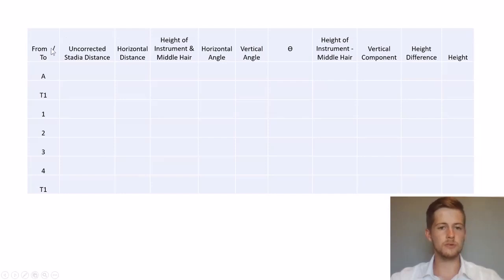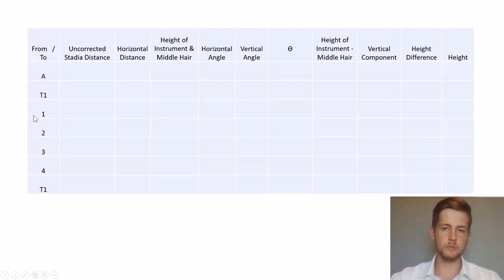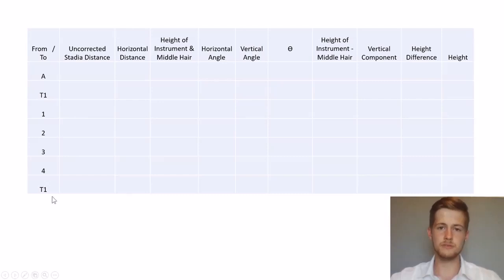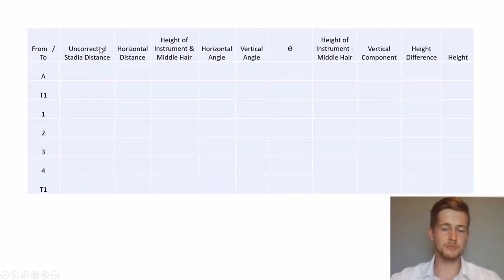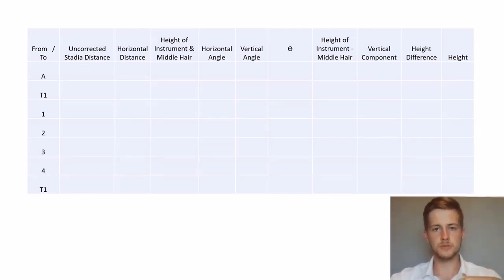First of all, you have your different columns that you have to fill in with your headings. You'll have the from-to, which shows which points you read from and which points you read. You'll have your benchmark and the station that you read from, as well as the points that you read. Then you'll have your uncorrected stadia distance — this is your top hair minus your bottom hair on the theodolite times 100, which gives your S value times 100.